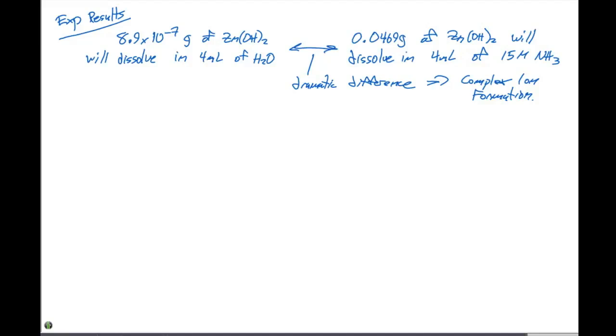Another very common question that we'll get involving the complex ions is that a complex ion is a nice way to remove a particular ion from solution. Because in this case, zinc 2+ is completely different than the complex ion that forms, which is Zn(NH3)4 2+. So we can effectively remove ions from solution using this complex ion formation.